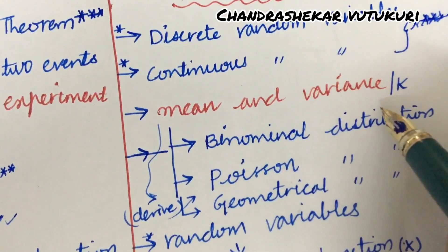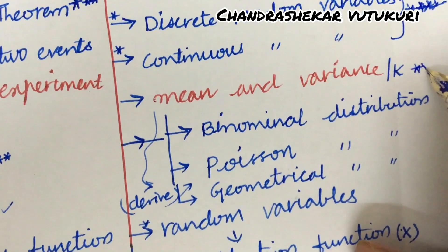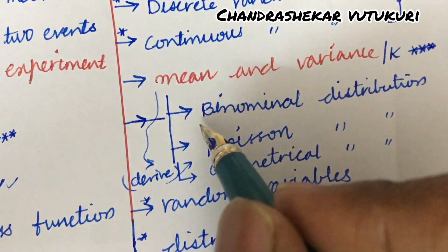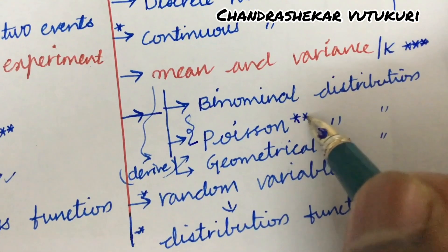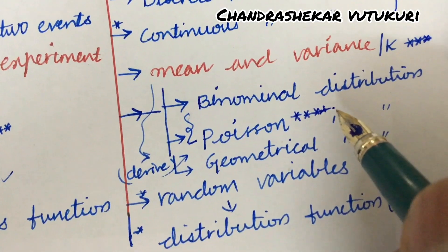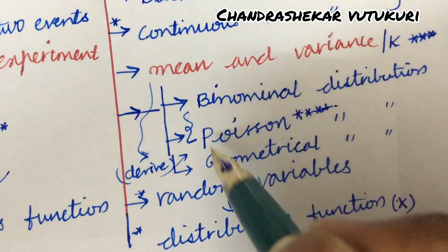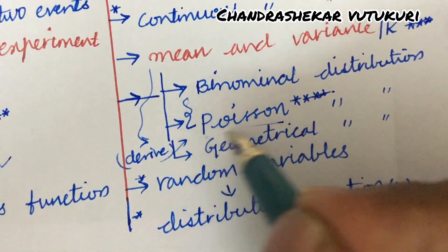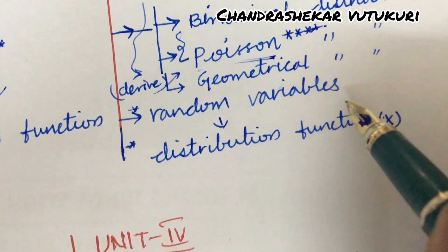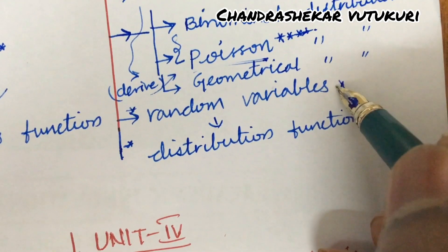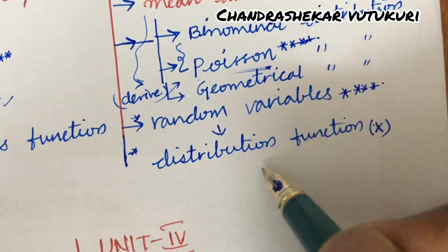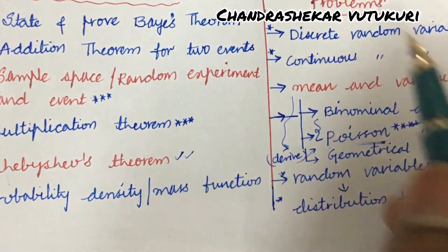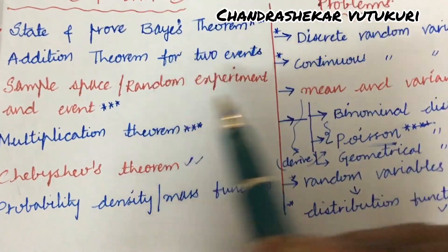The mean and variance, as well as finding the value of k — related problems will be asked for sure, based on binomial distribution or Poisson distribution. The Poisson distribution is asked several times repeatedly, and they have also asked to derive the mean and variance of all these distributions, including the geometric distribution. Related to Poisson distribution, we can expect a question this time, and from random variables you will get one question for sure — working out the distribution function.